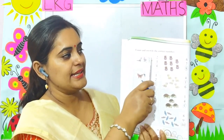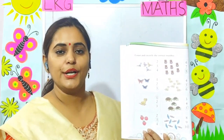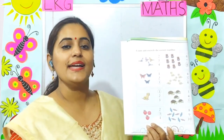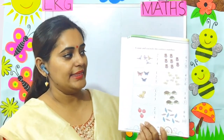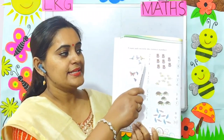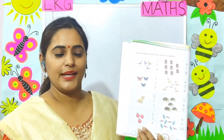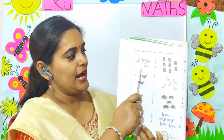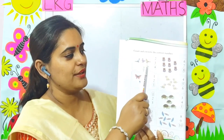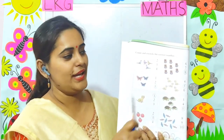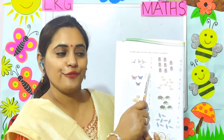Count and encircle the correct number. So here some objects are drawn. You have to count them and then circle the correct number. Let's see. How many birds are here? 1, 2, 3, 4. So you will circle number 4.